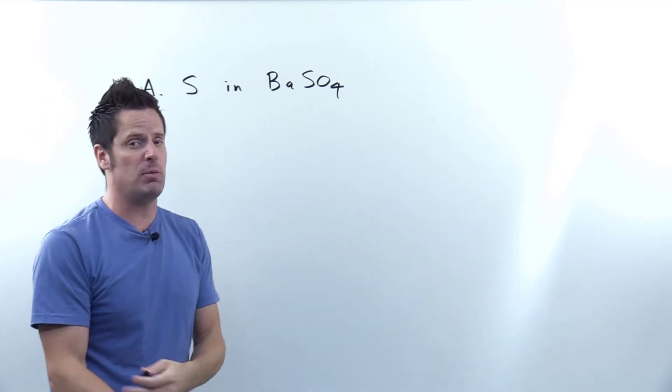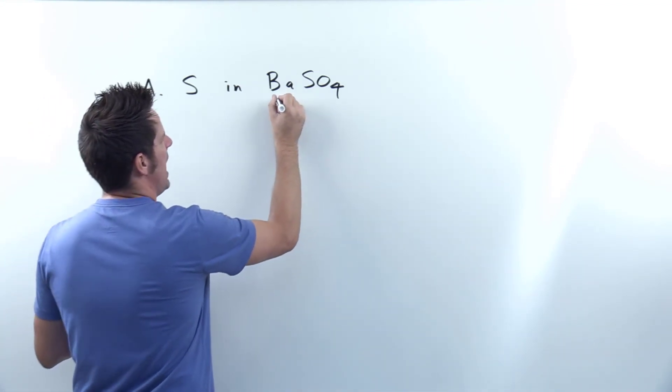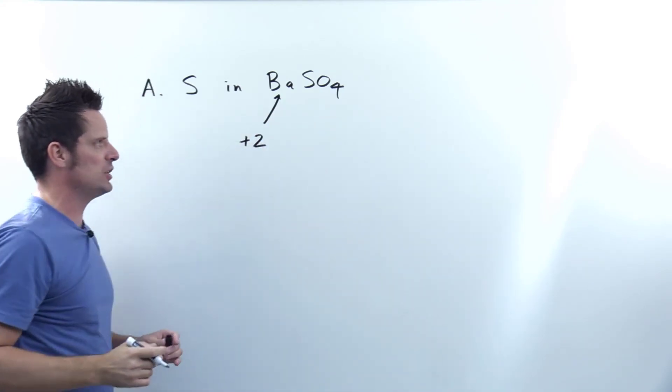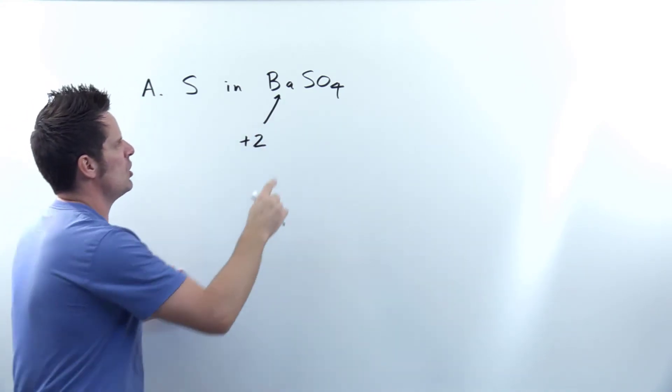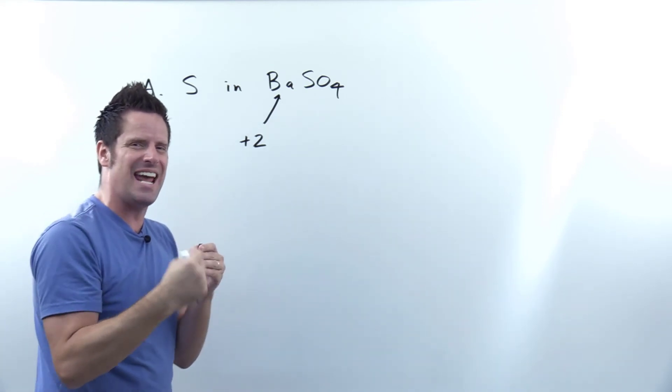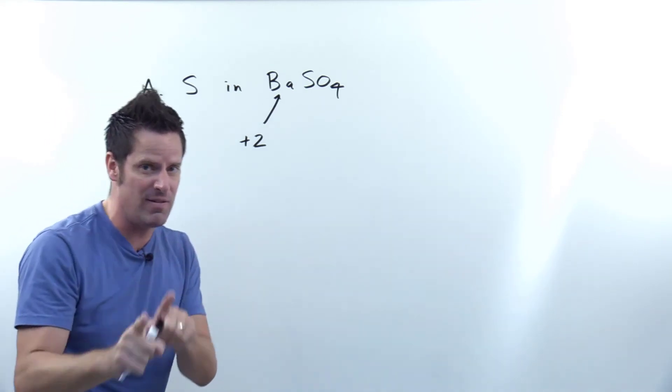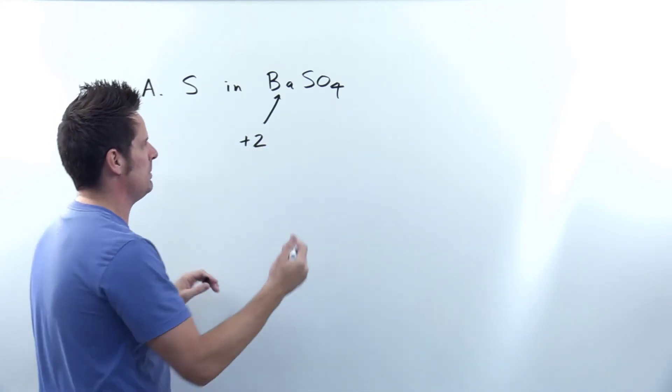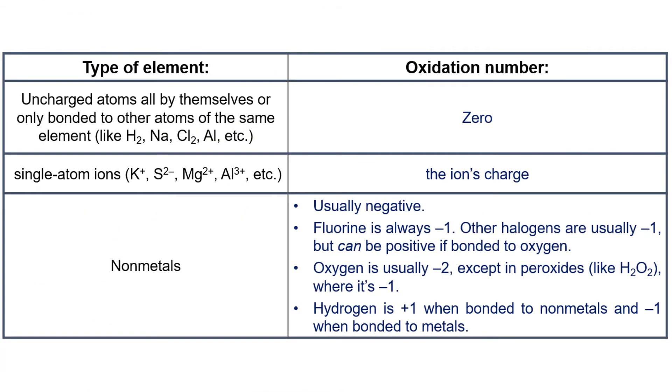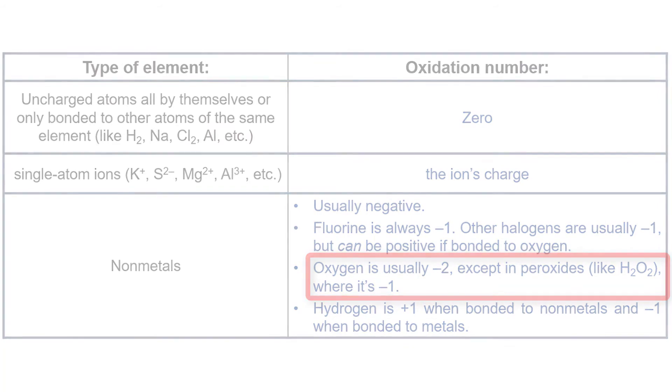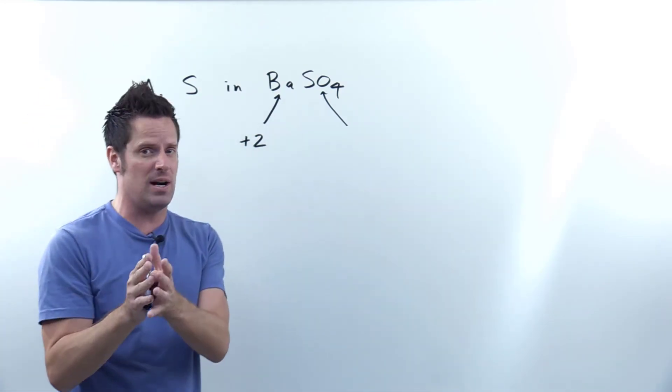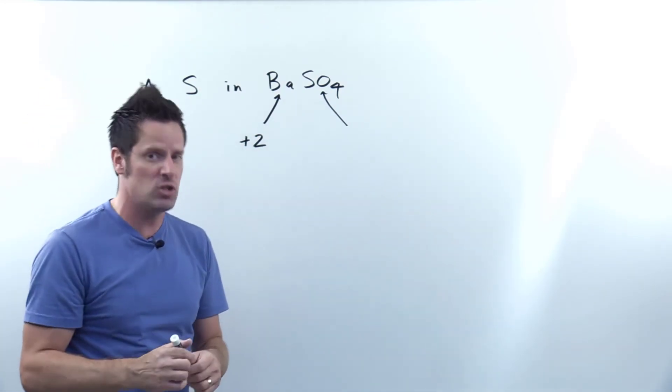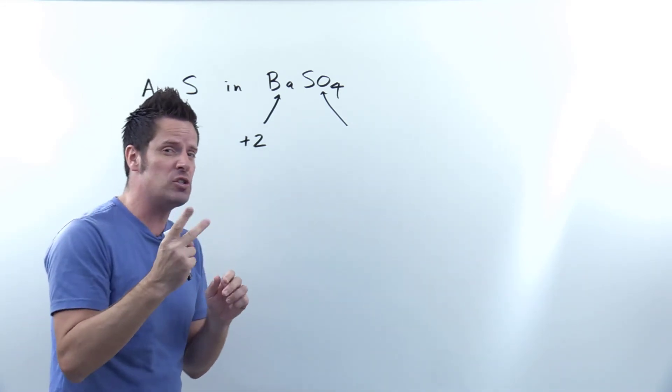Barium is in column two of the periodic table, which means that when it's in a compound, it will always have a plus two charge or oxidation number. Sulfur is in column six, so oftentimes it wants to be negative two. However, when you've got a bunch of oxygens next to it, that ends up mucking things up a little bit. Oxygen, according to our oxidation number rules, is always negative two unless it's all by itself uncharged or it's in the compound hydrogen peroxide H2O2. Aside from those two exceptions, it's always negative two.